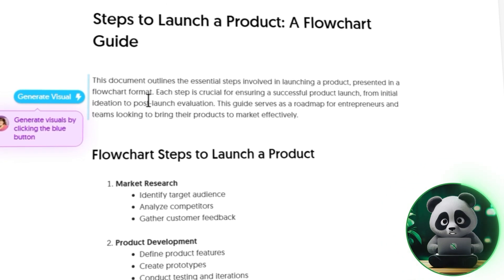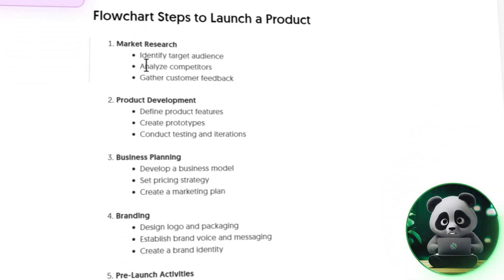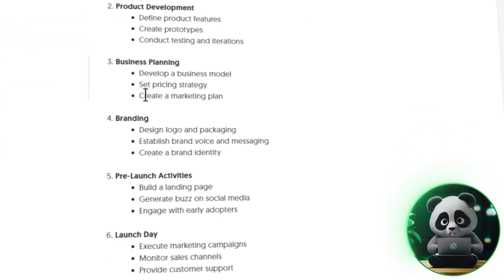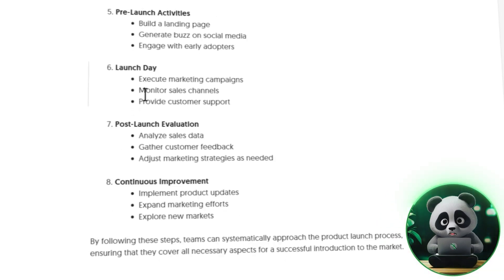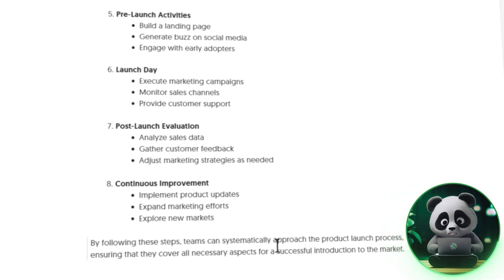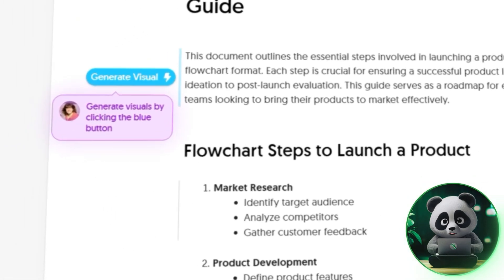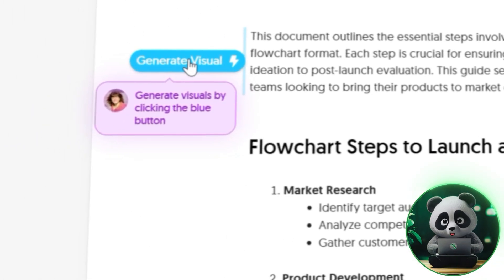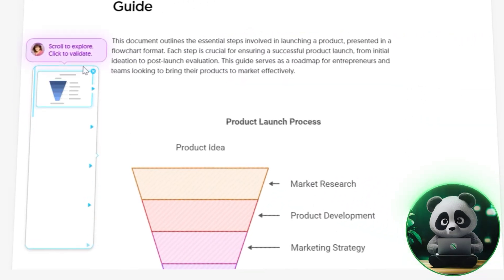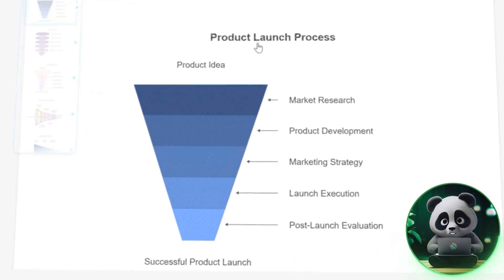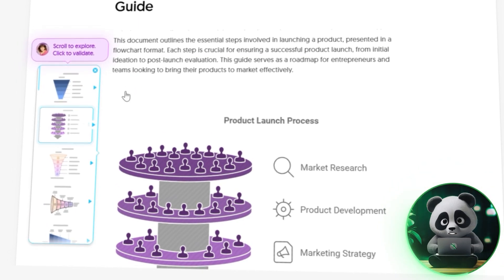Once the content is generated, you can review it, make edits if needed, and prepare it for the next step. Now here comes the exciting part. Hover over the text block you've just created, and you'll see a blue button that says Generate Visual. Go ahead and click it. Napkin AI will take a moment to analyze what you've written, and then it'll show you various visual options that could work perfectly with your content.